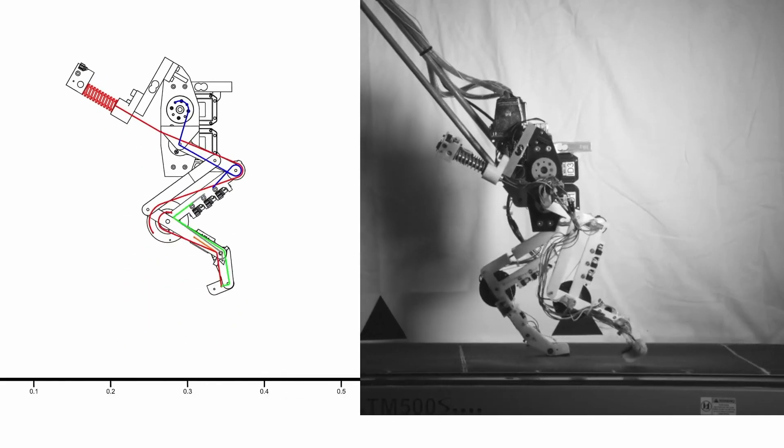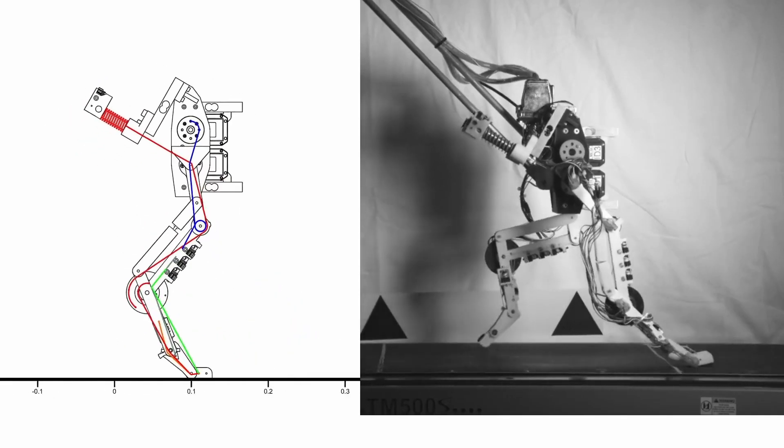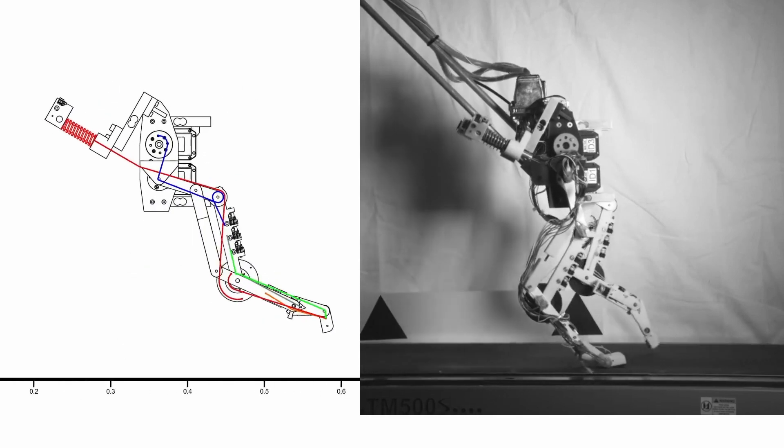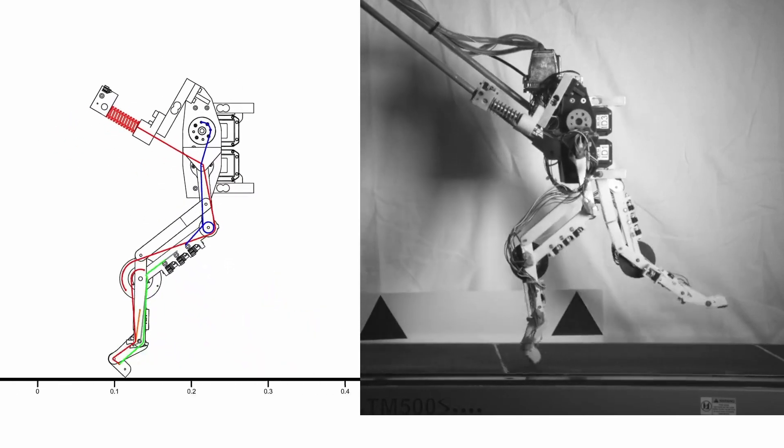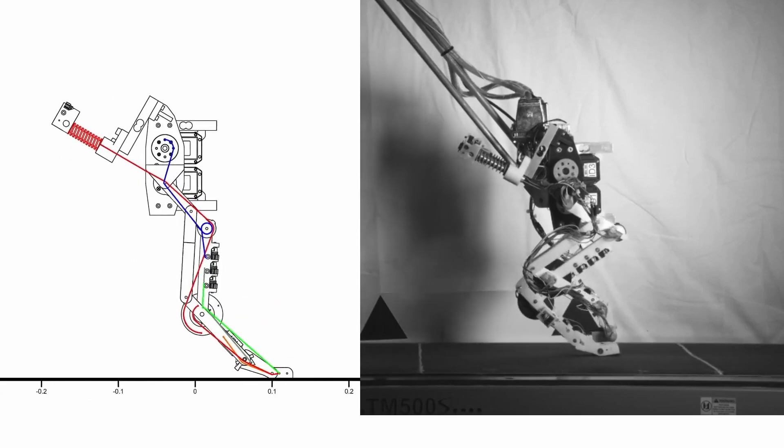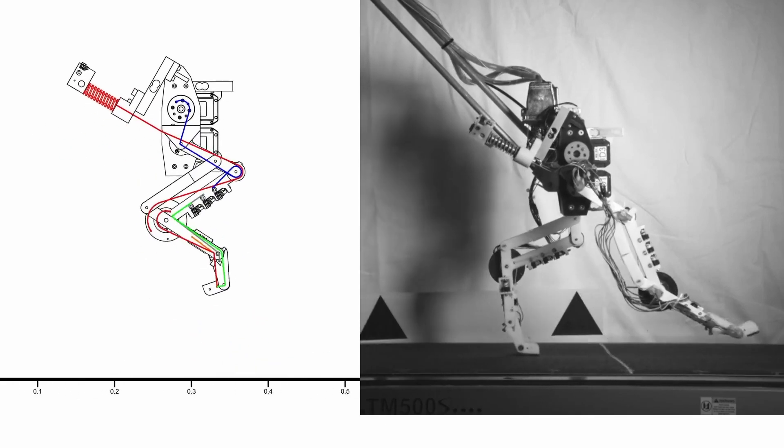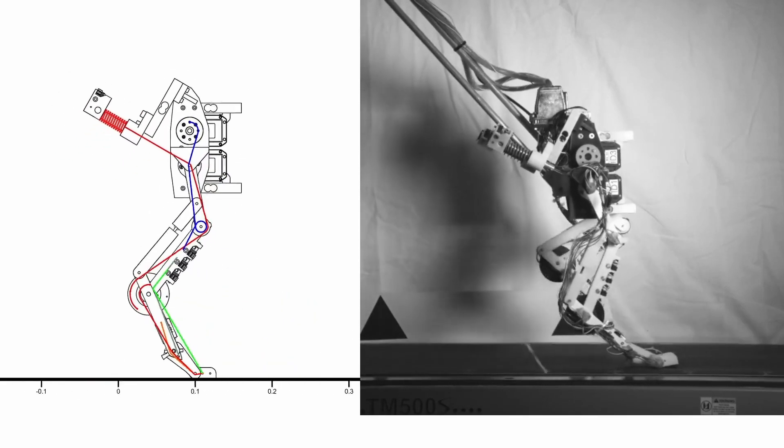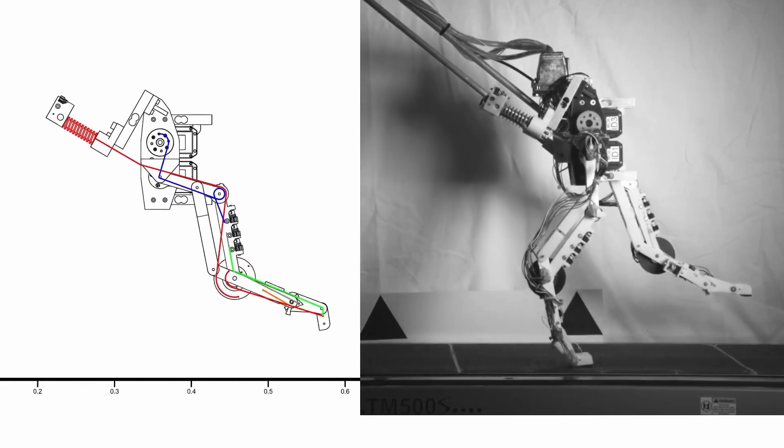Dedicated extensor tendons coordinate toe movements. They extend toes in preparation for touchdown. Toe joint flexion and ankle extension are mechanically coupled by toe extensor tendons. These tendons will act on toe joints in late swing phase.